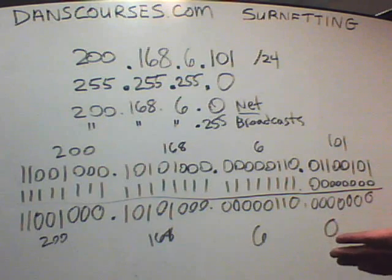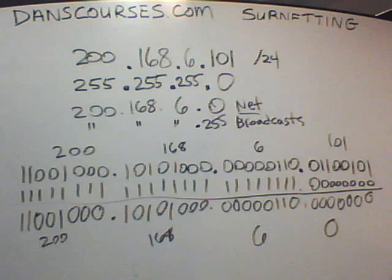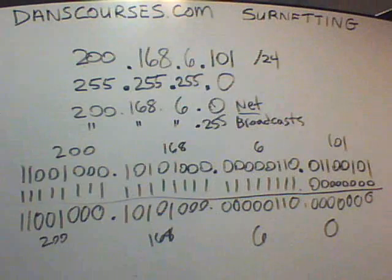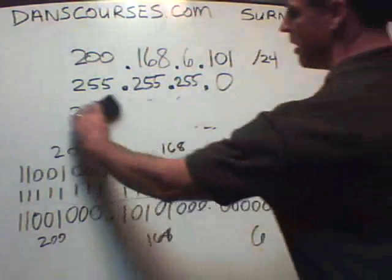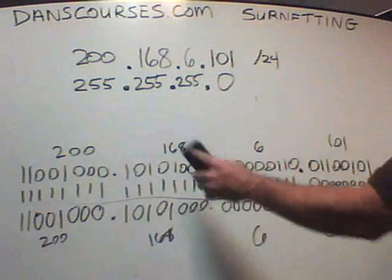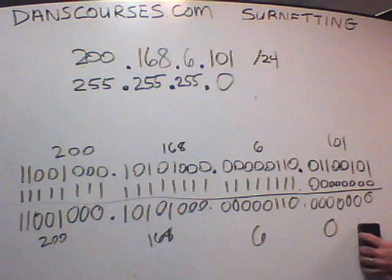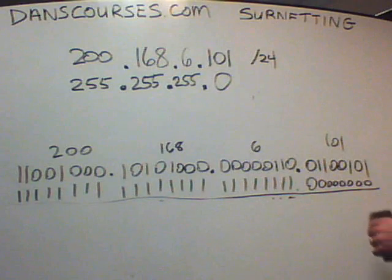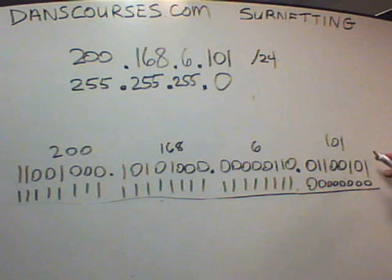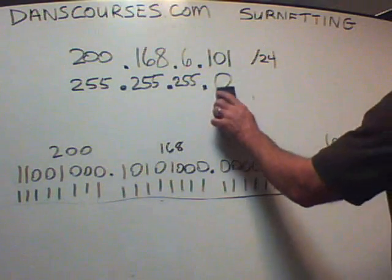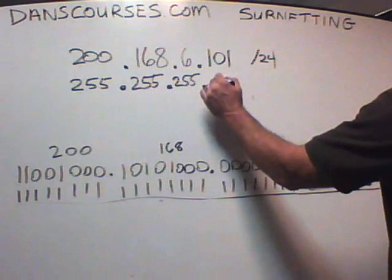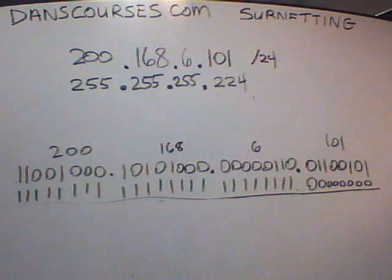What if we want to break this network up into more networks — what if we want to subnet it? Now we're going to start getting into subnetting. We want to divide this 6.0 network into more than one subnet. To do that, the IP address doesn't change; we change the subnet mask. In this case, we're going to change the subnet mask to 255.255.255.224.